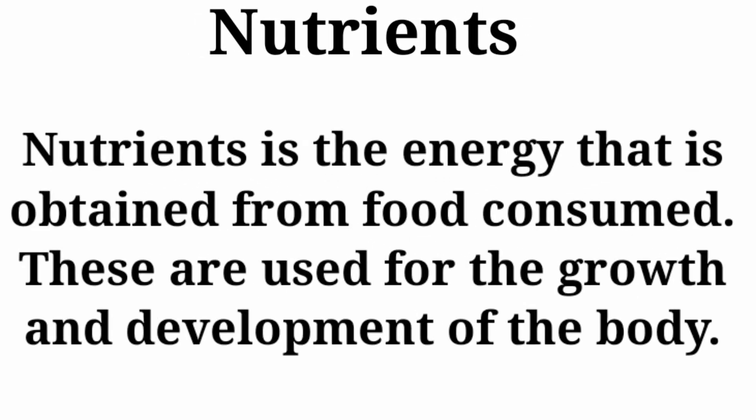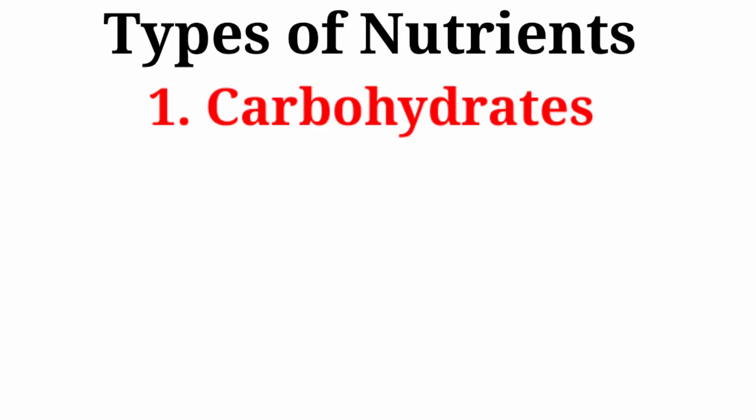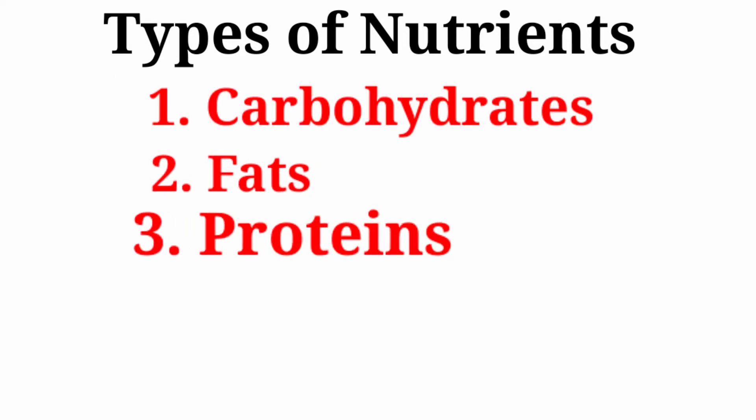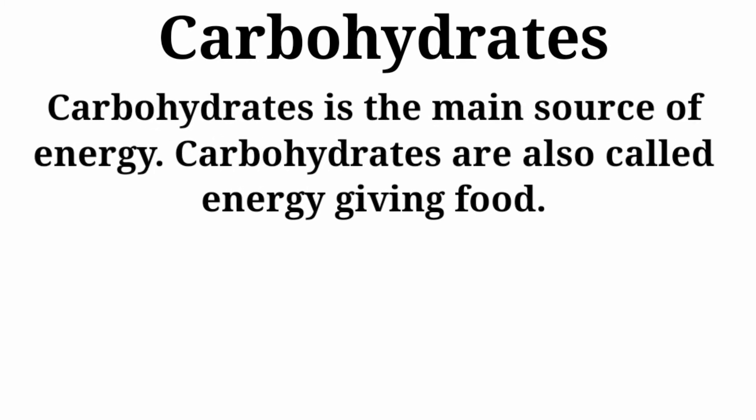Components of food: nutrients. Nutrients is the energy that is obtained from food consumed. These are used for the growth and development of the body. There are five main types of nutrients: carbohydrates, fats, proteins, minerals, and vitamins. Carbohydrate is the main source of energy and is also called energy-giving food.